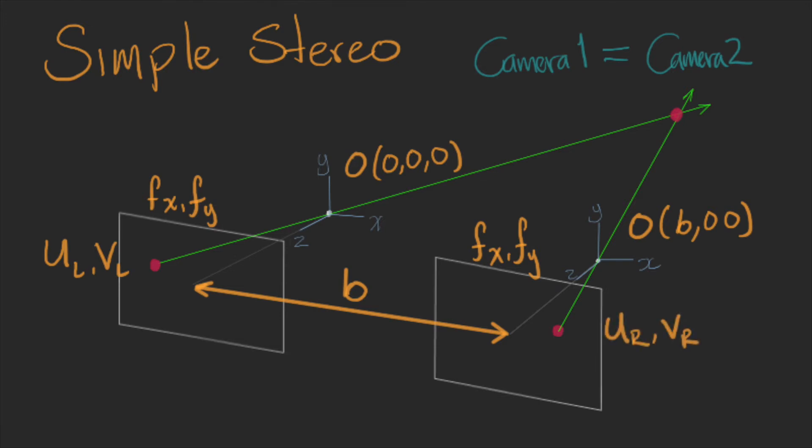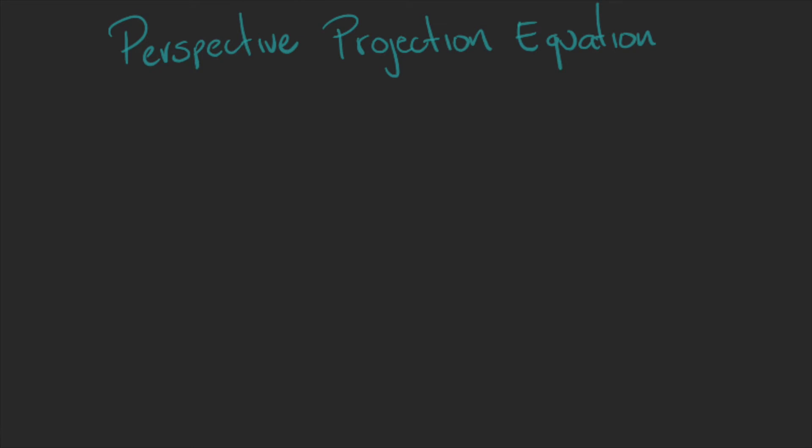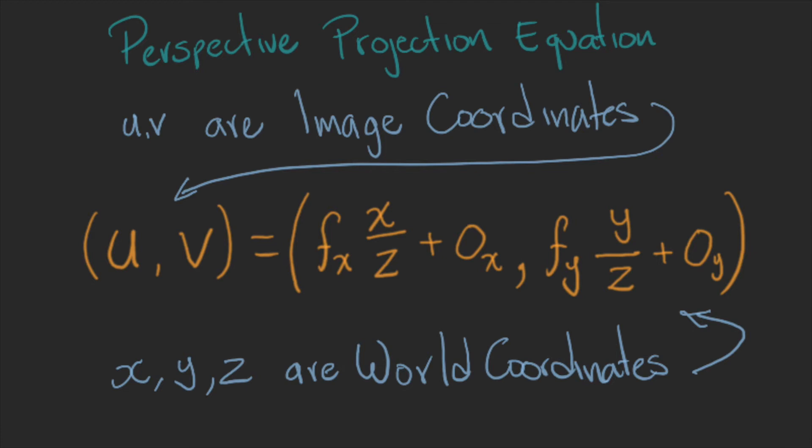And based on the perspective projection equations, we know that a point with coordinates located in an X, Y, and Z position in the space, also called world coordinates.